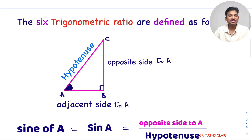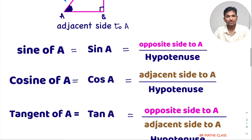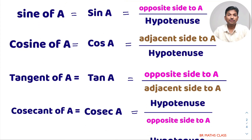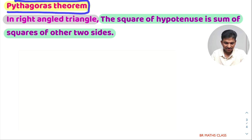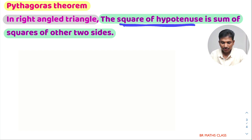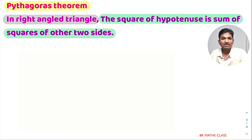The trigonometric ratios are defined like this. It is important that you memorize all these trigonometric ratios. If you are thorough in these, we are going to use these formulas very frequently throughout this chapter. The next important point you need to know is the Pythagoras theorem statement. In a right angle triangle, the square of the hypotenuse is equal to the sum of squares of the other two sides.